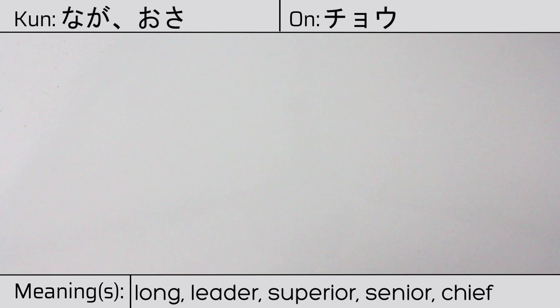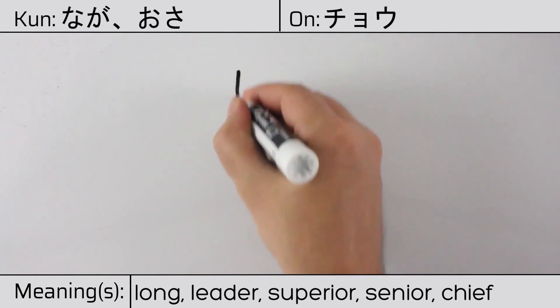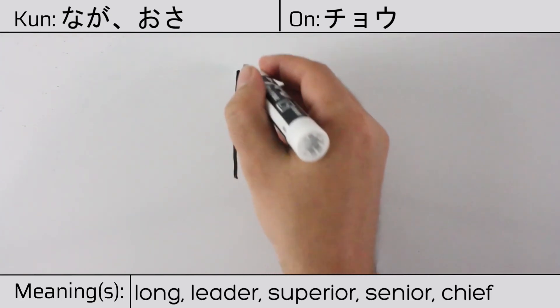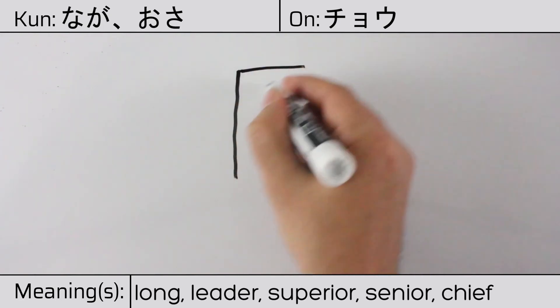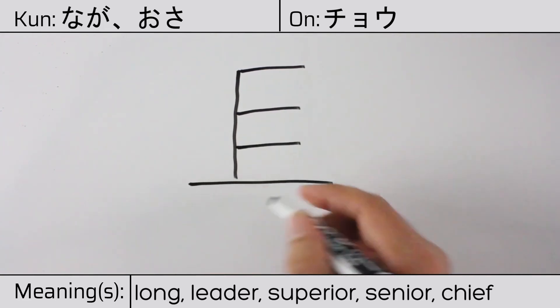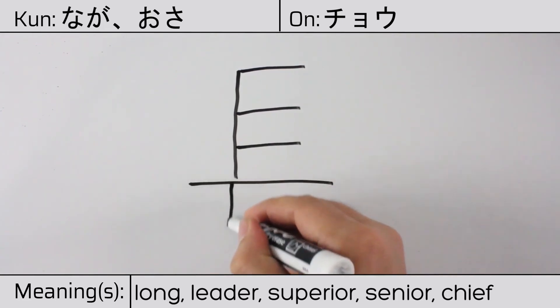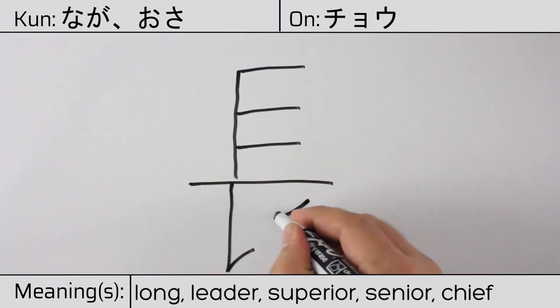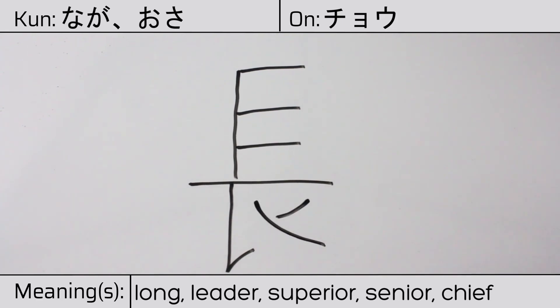Here is the stroke order. You can remember this kanji by the fact that it looks like a hairbrush, and you can think of it as running through a person's long flowing hair.